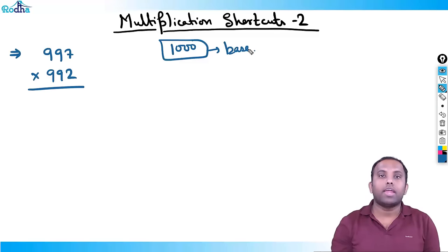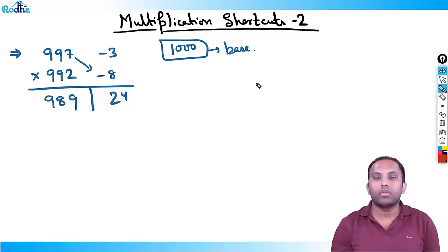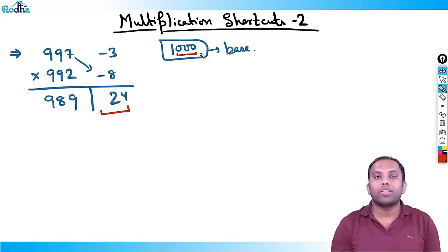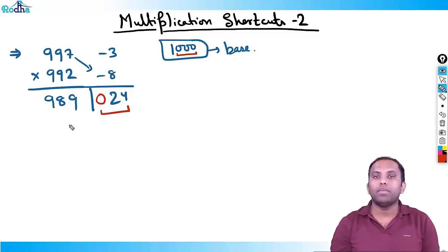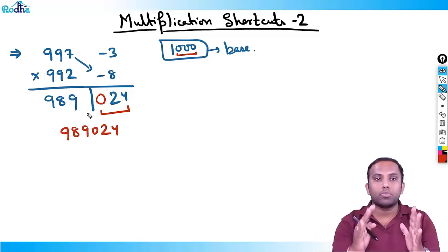997 into 992: difference here is minus 3, and minus 8. Cross multiply: 3 into 8 gives 24, so right part is 24. Our rule: the number of zeros in the base equals the number of digits in the right part. Base 1000 has three zeros, so there must be three digits. Cross addition gives 989. We pad to three digits: 024. The answer is 989024.